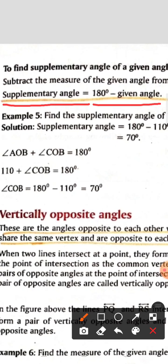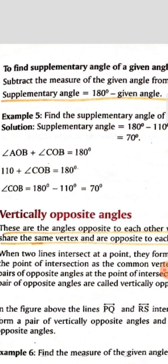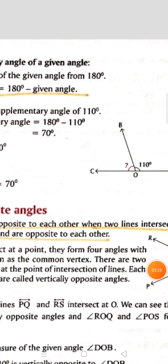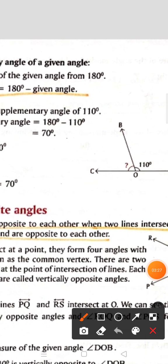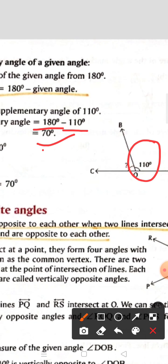We use 180 because it is a supplementary angle — you subtract the given angle from 180. For example, the given angle is 110 degrees, so 180 minus 110 equals 70 degrees. That is the supplementary angle.